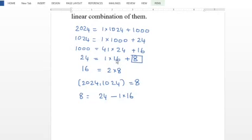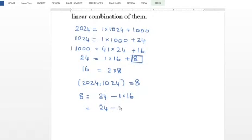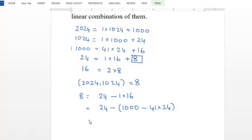We substitute at each stage. 8 equals 24 minus 1 times 16. Substituting the previous remainder expression, we get: 24 minus 1 times (1000 minus 41 times 24), which gives minus 1000 plus 42 times 24.